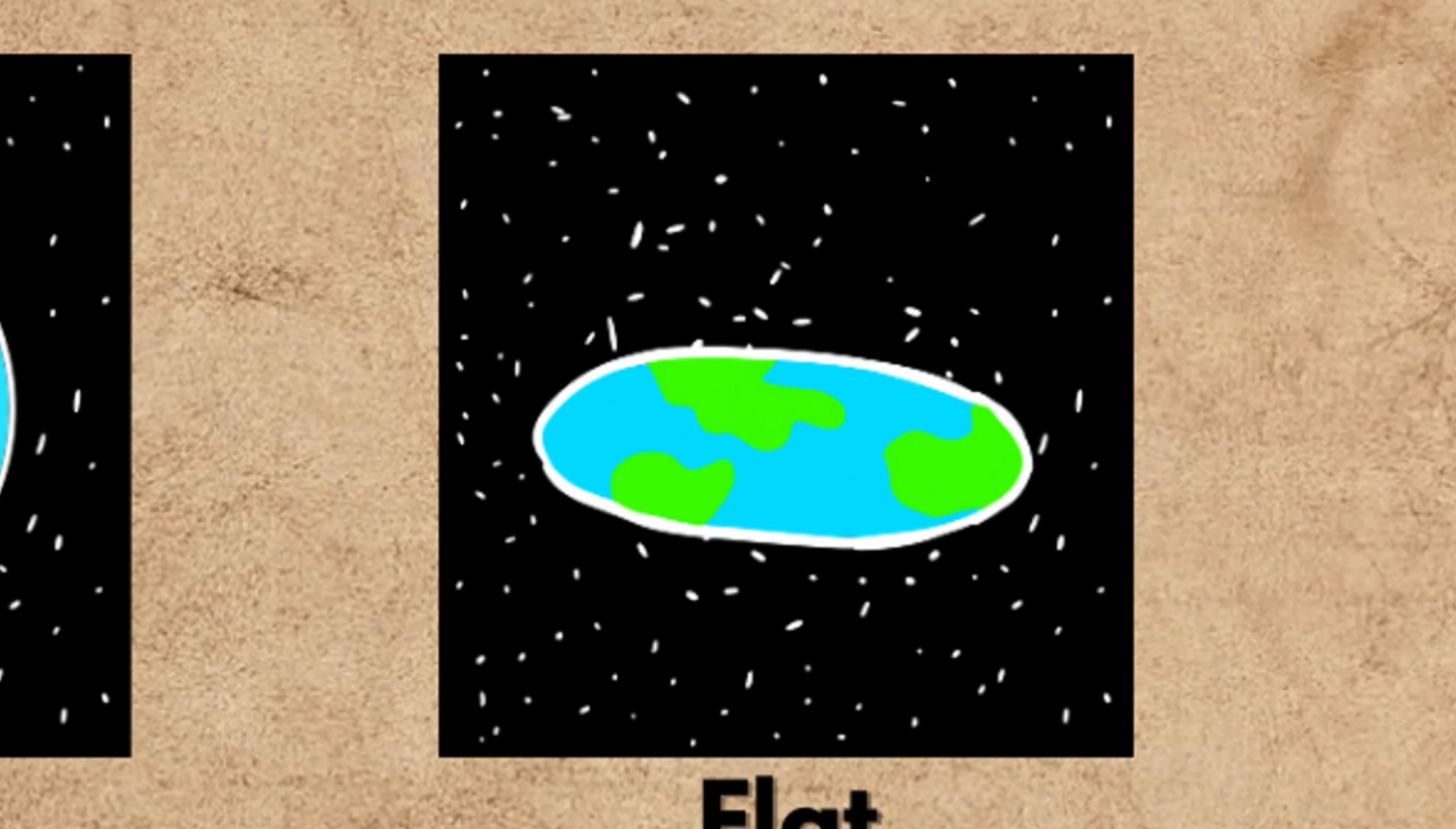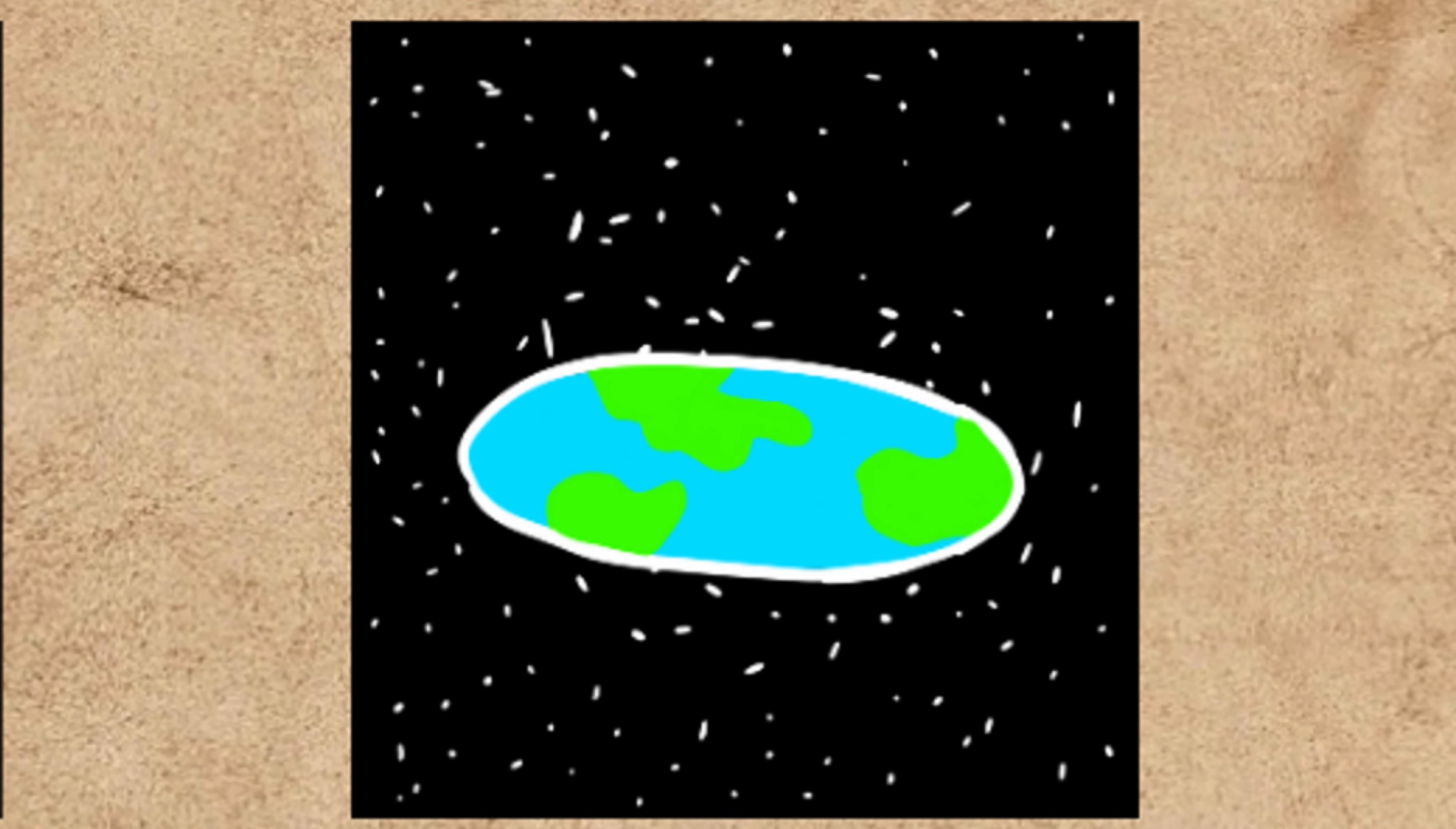And finally, at number one, we have the theory so famously wrong, it's become the poster child for debunked ideas: the flat Earth. The belief is simple. Earth isn't a globe, but a flat, disc-shaped plane with the North Pole at its center, and a giant ice wall, Antarctica, around the rim to keep the oceans from spilling off.